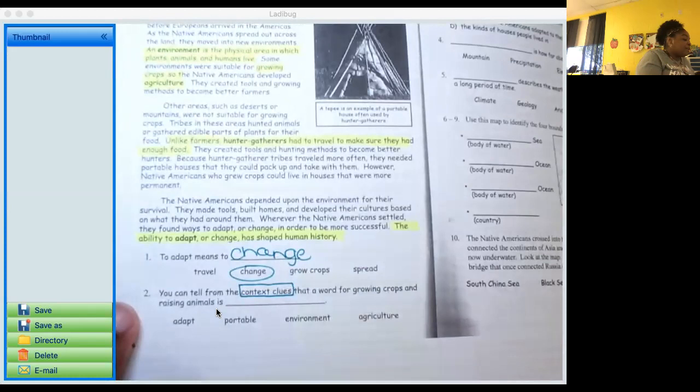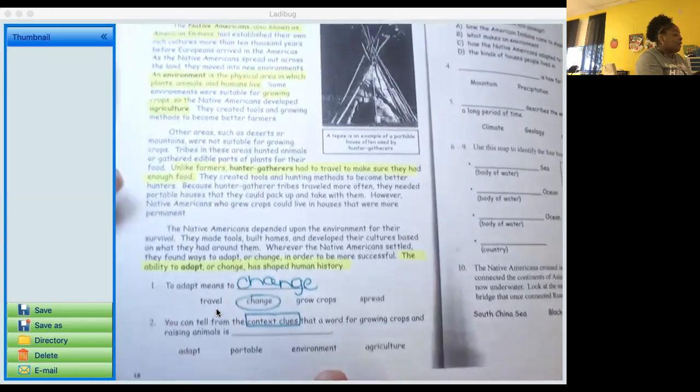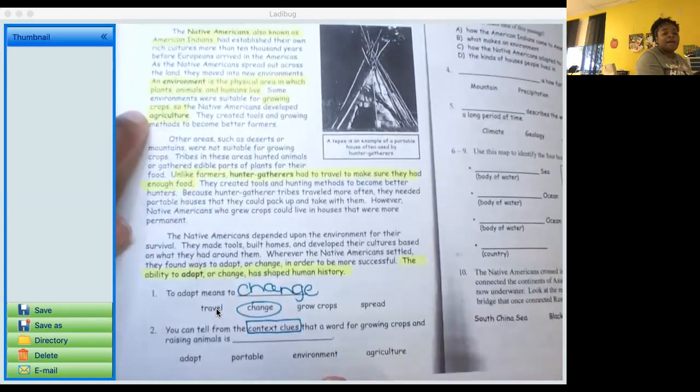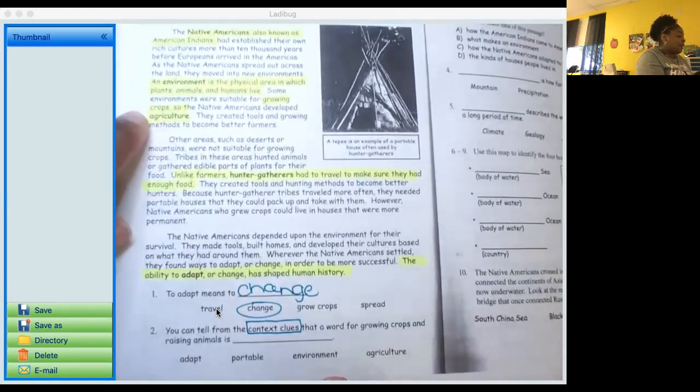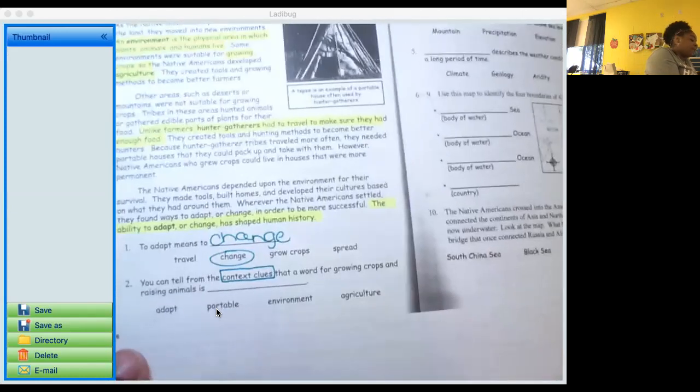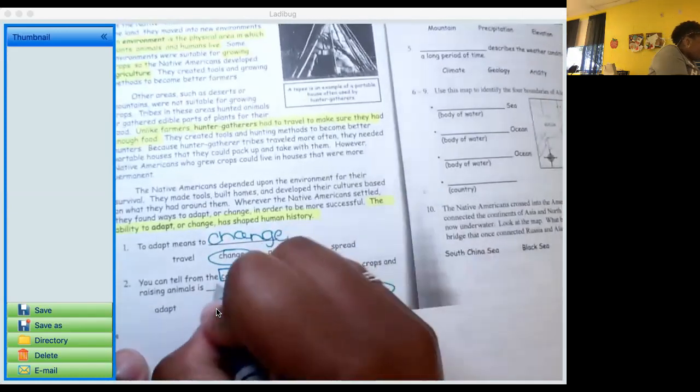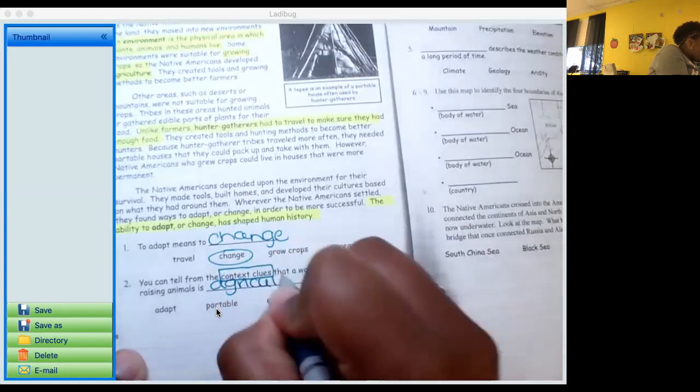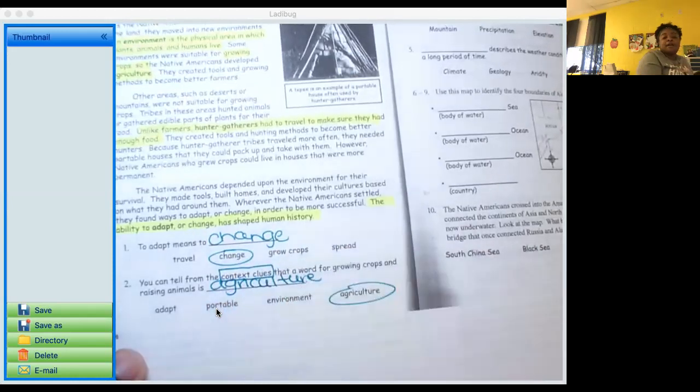You can tell from the context clues that a word for growing crops and raising animals is what? So I feel like I've seen something about growing crops up here at the top, first paragraph. I know that agriculture is the word that we're looking for because we already highlighted it. Agriculture.